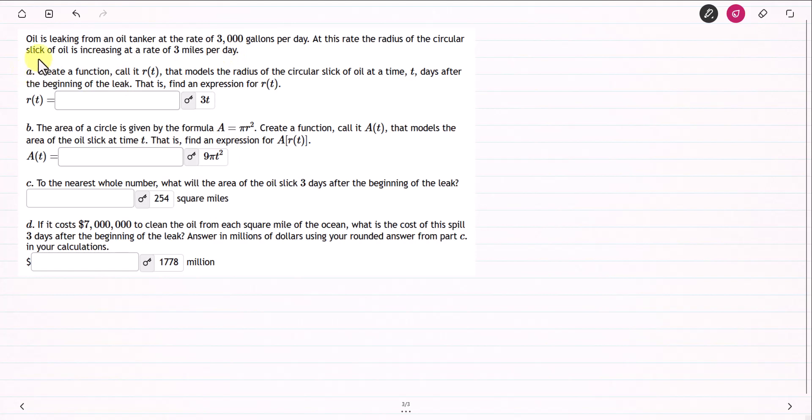Part A. Create a function, called R, that models the radius of the circular slick of oil at time t, days after the beginning of the leak, and find an expression for R of t.